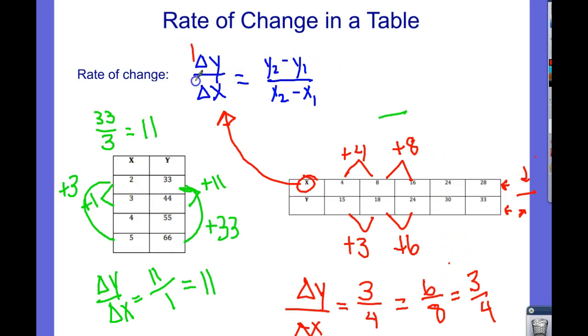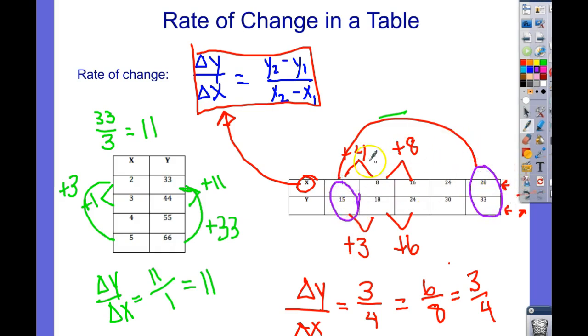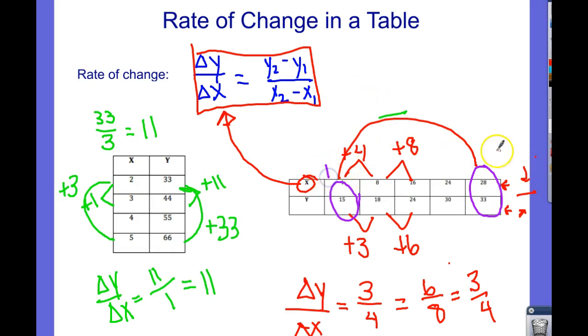So this is the important part here. Change in y over change in x. Let's do an example of y2 minus y1. Let's say I wanted to do these two guys. Let's go ahead and circle them. Here are my two points, 4 and 15, 28 and 33. So these will be my ones, and these will be my twos. So I'll do the twos first. For y2 is 33, minus y1 is 15. 33 minus 15. Here's x2, 28 minus 4 is x1. 28 minus 4.